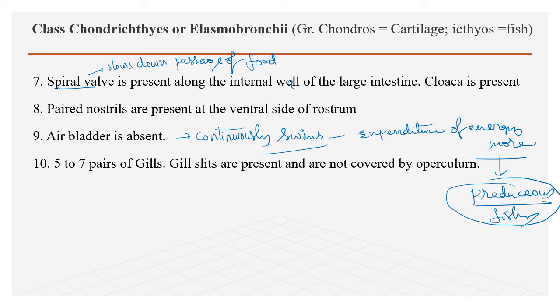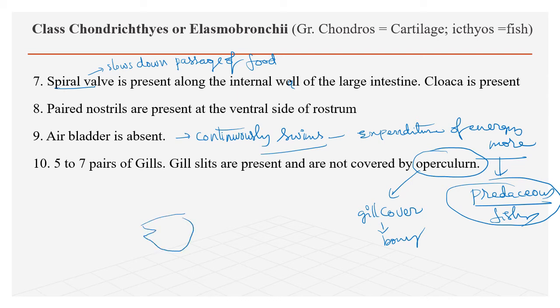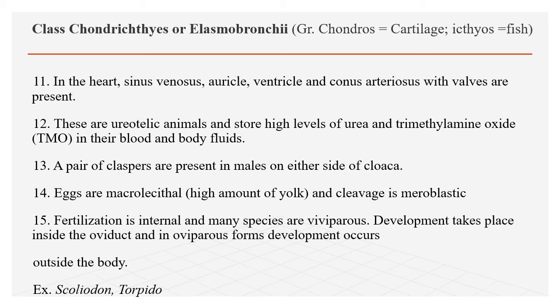They have 5 to 7 pairs of gills which are not covered with an operculum — the operculum, or gill cover, is absent. In the heart there are two chambers: one is the auricle and the second is the ventricle. In addition there are two more chambers — the sinus venosus and the conus arteriosus.